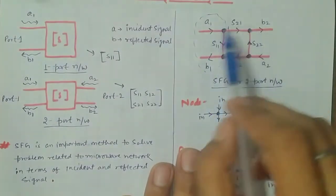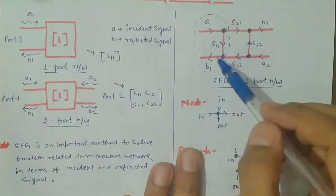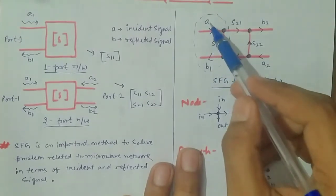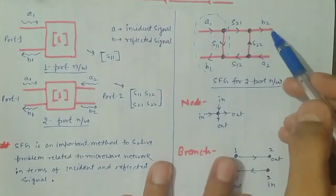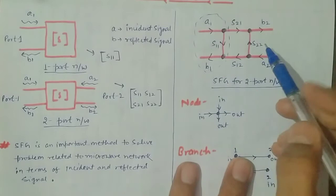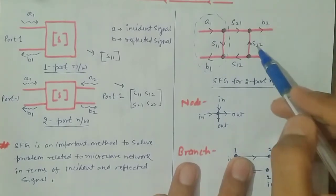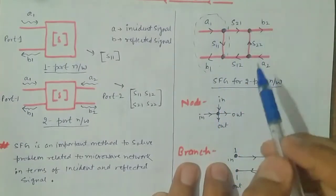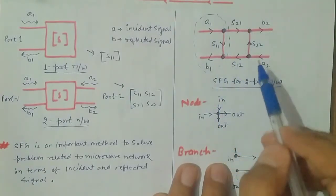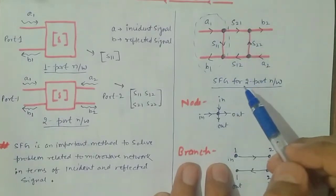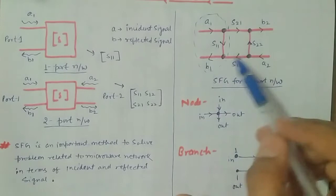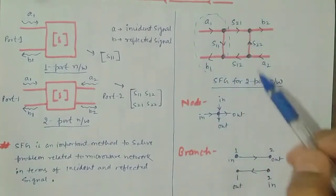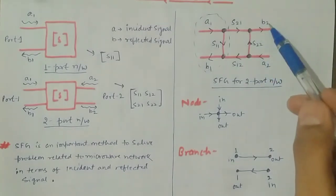The property of this SFG is that if I want to find the relation between A1 and B1, and I know the coefficient S11, I can find that relation. Similarly, I can find the relation between A2 and B2 — B2 equals S22 times A2 — and also between A1 and B2, and between A2 and B1, all in terms of S-parameters. That is the advantage of the SFG: for any given network, we can draw its SFG and find out the relations between these values.